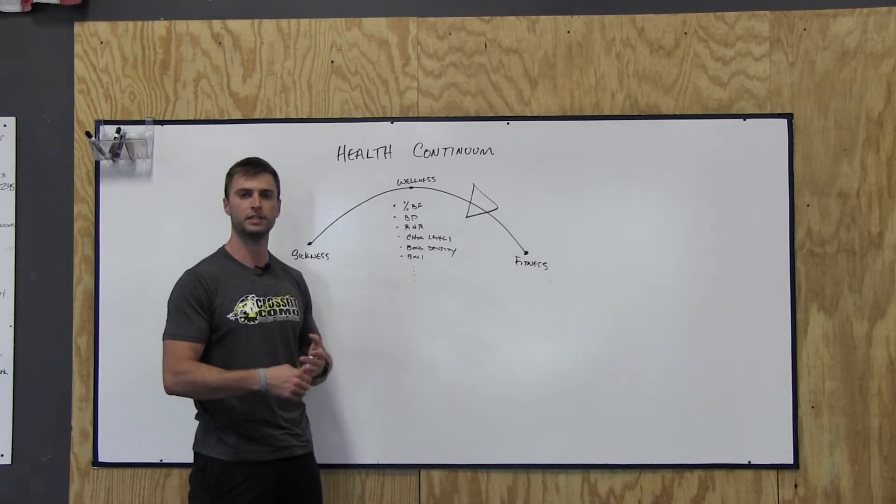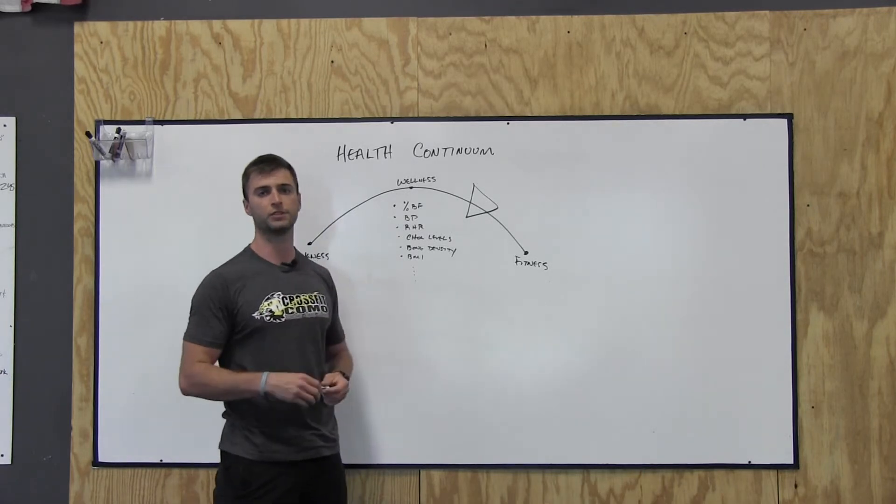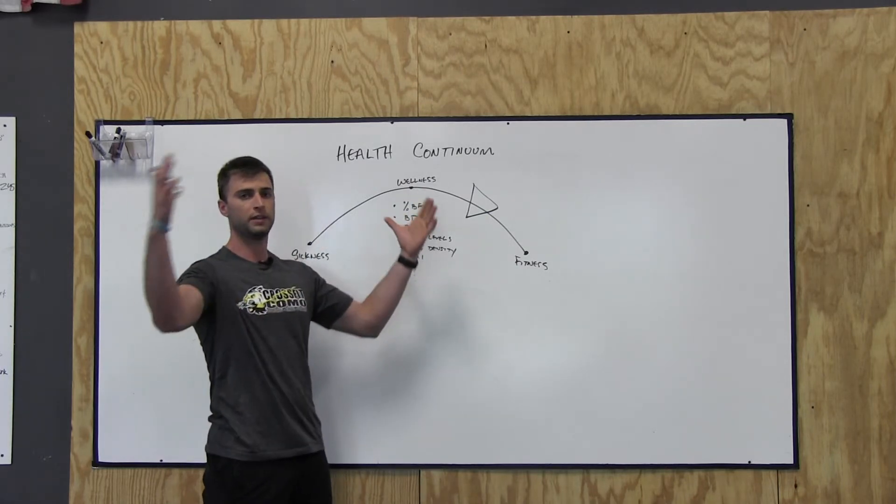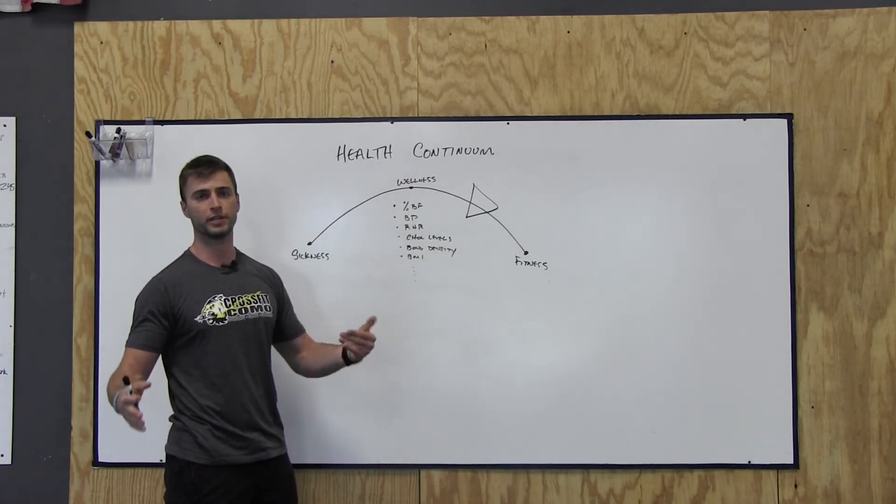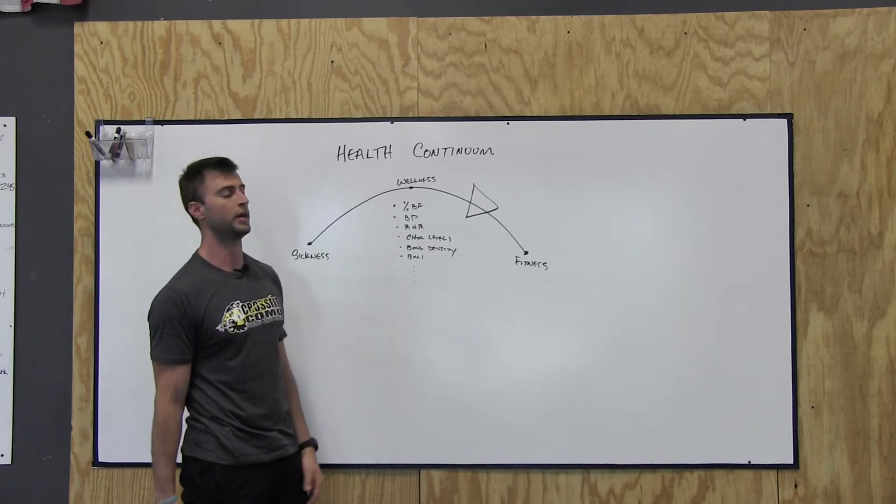Imagine depositing money from now until you're 70 years old. Let's say $100 a month or $200 a month into a savings account. By the time you're 70 years old, you're going to have this amount of wealth that when you can retire, stop working, stop saving, and you'll be able to spend that money. And eventually, obviously, you'll run out.